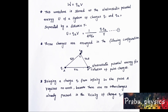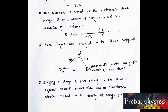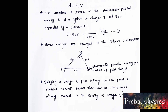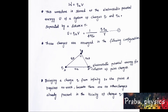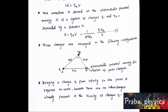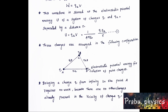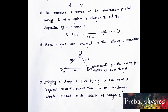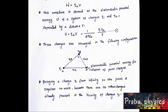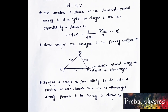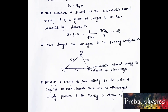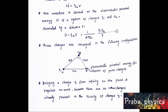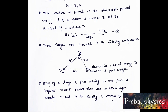For charges q1 and q2 separated by distance r, the electrostatic potential energy is U = (1/4πε₀)(q1·q2/r). This is Equation 1. Next, we consider 3 charges arranged in a configuration.